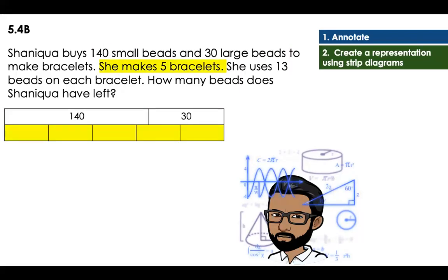And now she makes five bracelets. I'm going to ask you a question. Are there five equal parts here? You need to be careful with this little word right here: left. Left means that there are five parts and there is one more. That one is going to be the left portion.